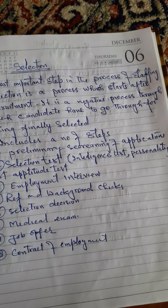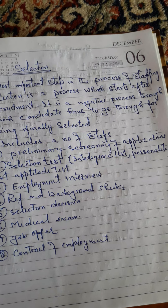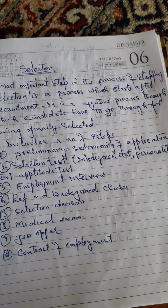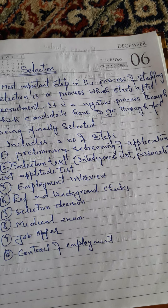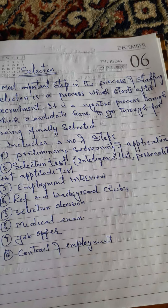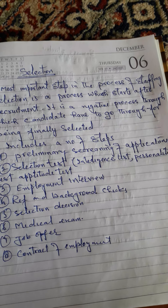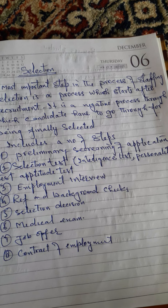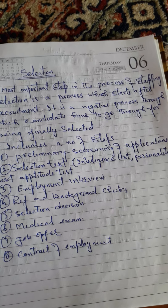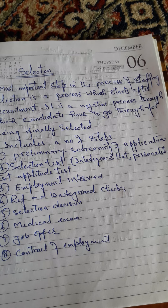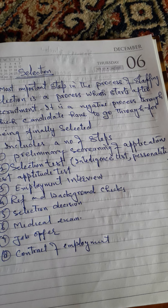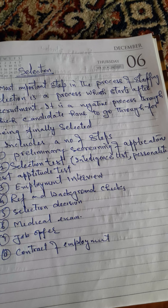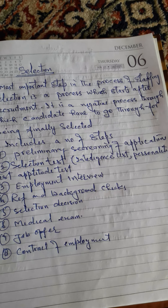Selection is called a negative process because at every stage some candidates have to go out. For example, if 1000 employees have applied for 10 positions, then we have to select 10 out of 1000 — meaning we have to negate 990 persons. So it is a negative process.